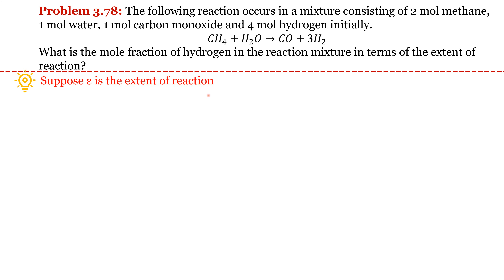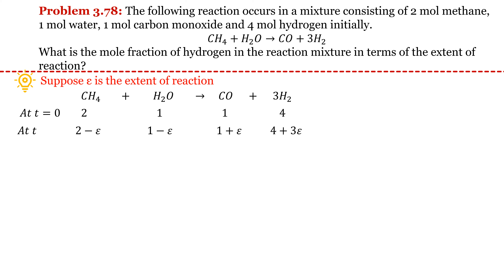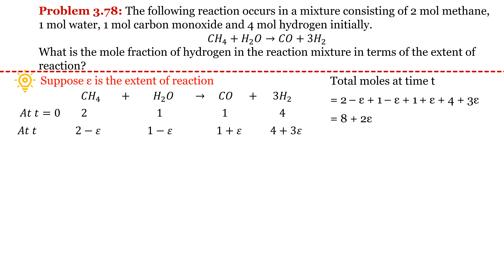Suppose epsilon is the extent of reaction. Rewrite the balanced chemical reaction and write the number of moles of reactant and product present at time t=0. At time t, moles of CH4 will be equal to 2 minus epsilon, for H2O it will be 1 minus epsilon, for CO it will be 1 plus epsilon, and for H2 it will be 4 plus 3 epsilon. The total moles at time t will come out as 8 + 2 epsilon.